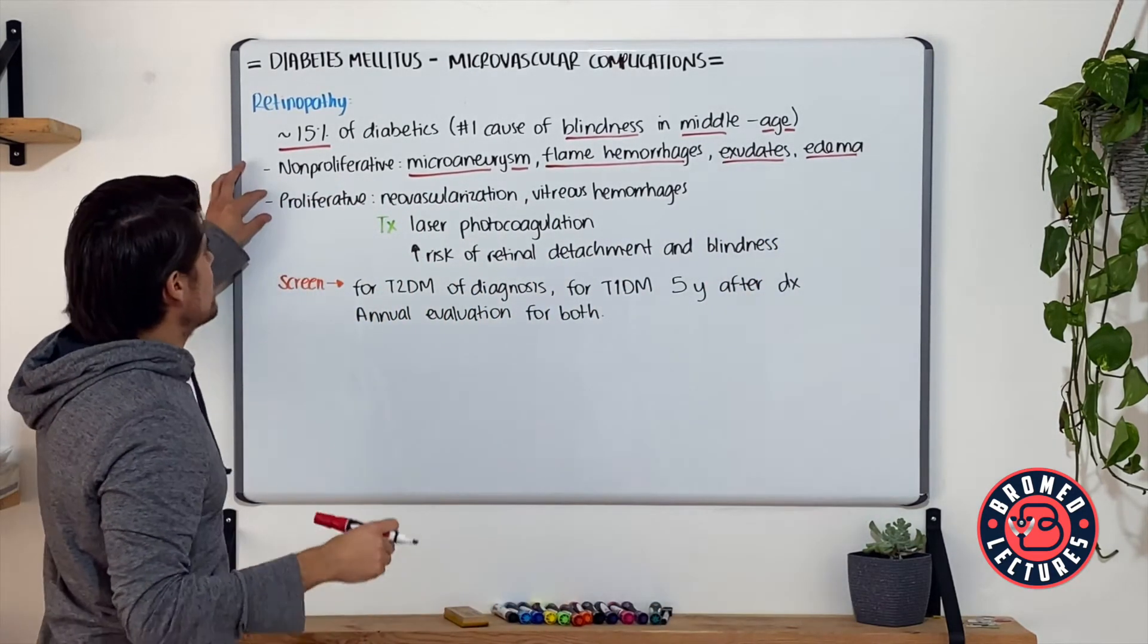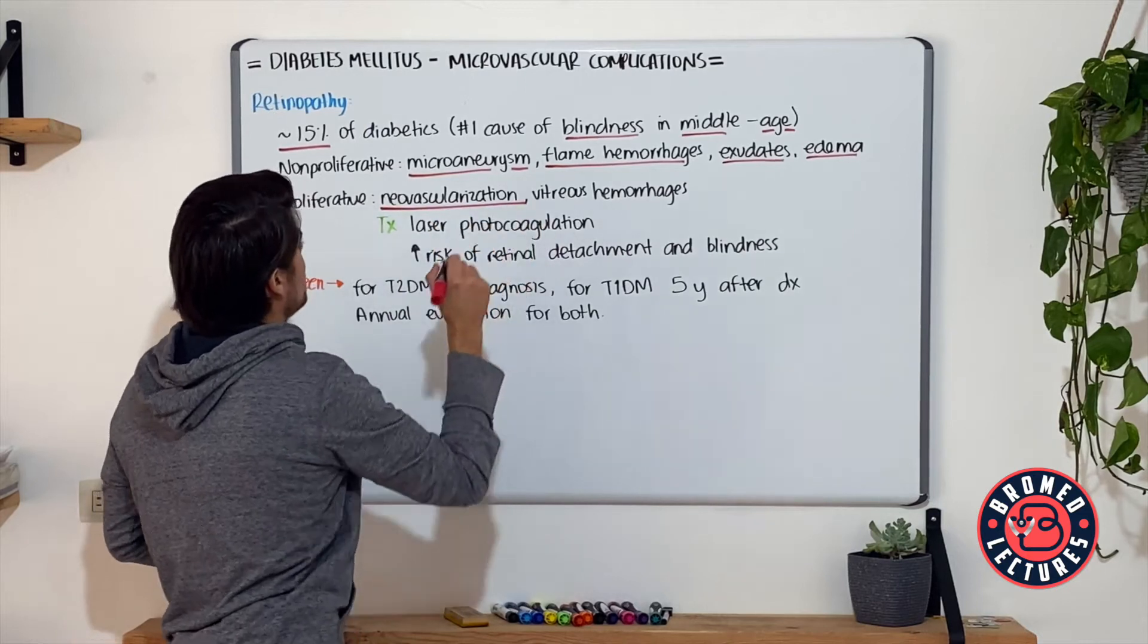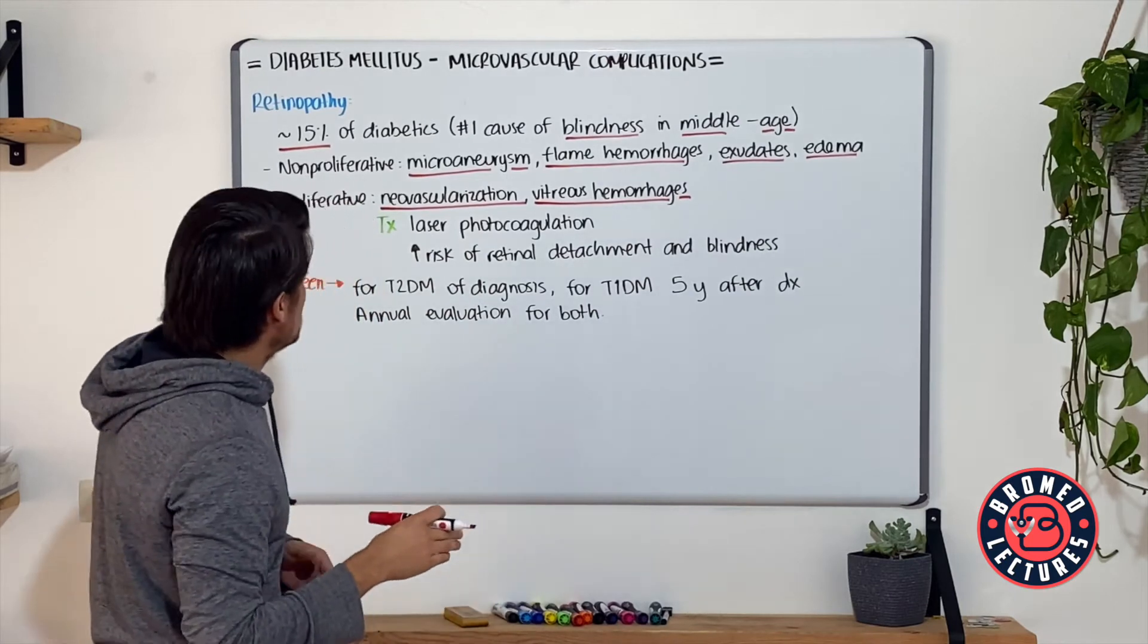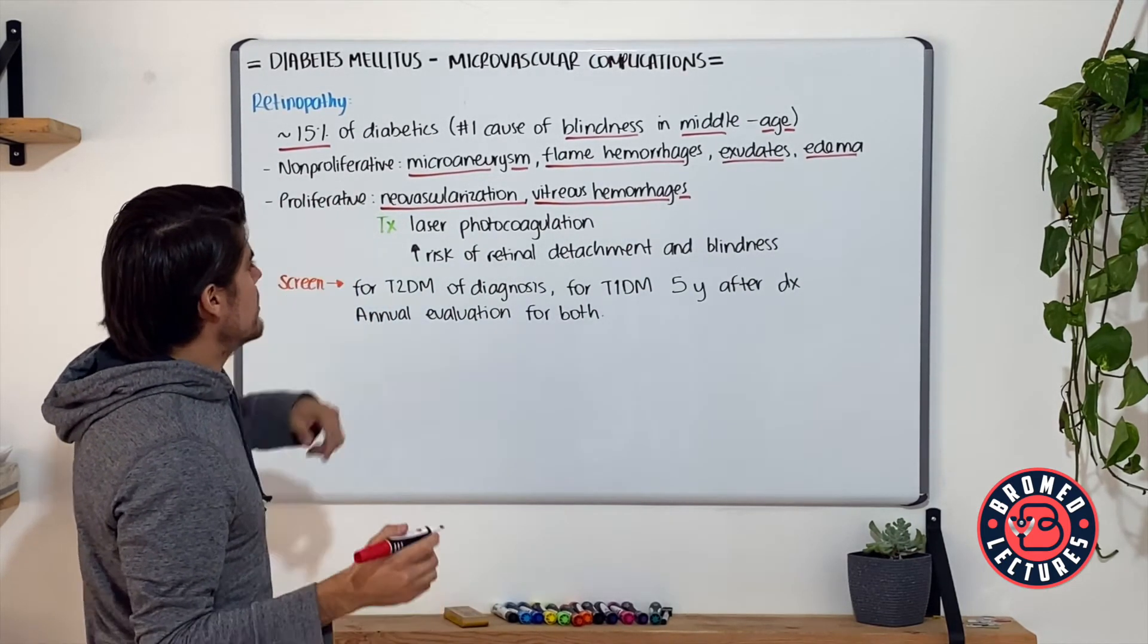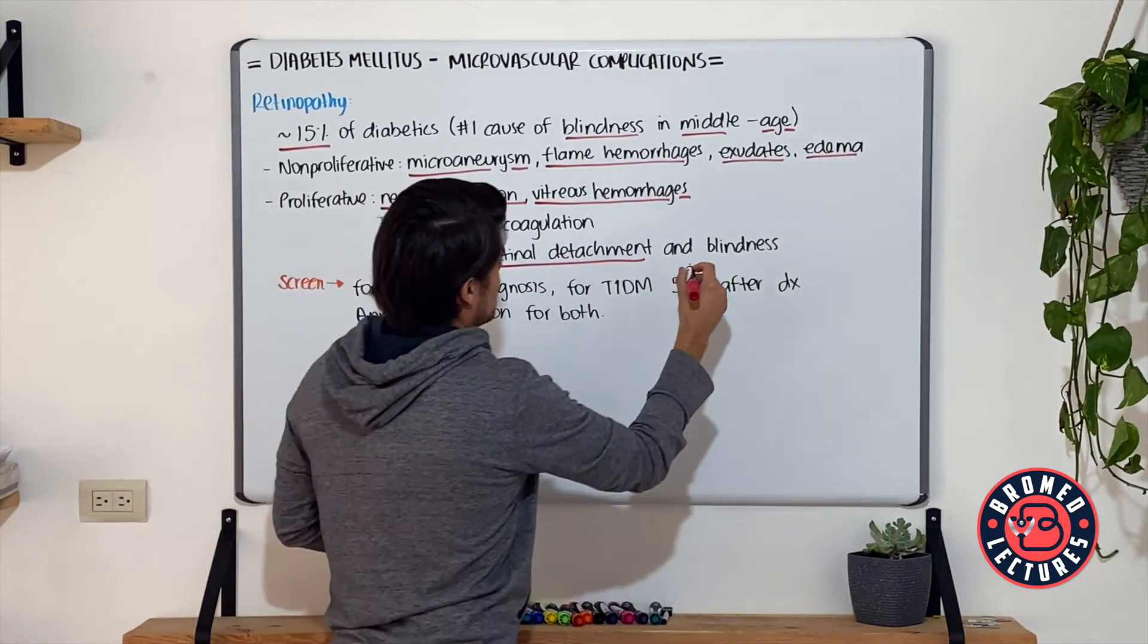The proliferative type has already developed neovascularization and vitreous hemorrhages. This is treated through laser photocoagulation because there is an increased risk of retinal detachment and blindness for these patients.